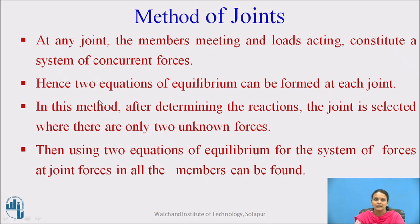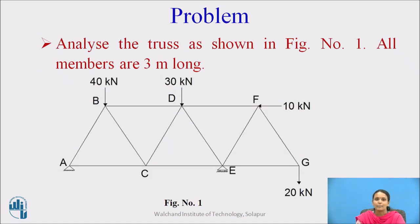As we know, there are only two equilibrium conditions, so you have to select the joint which will have only two unknown forces. Then, using equilibrium equations for the system of forces at the joint, we have to calculate the forces in members. We will now see how to find out the forces in all the members of this truss.